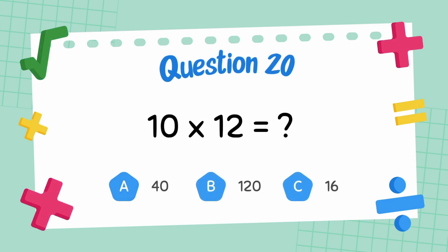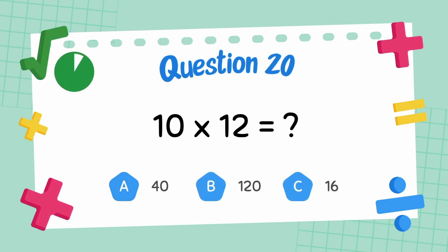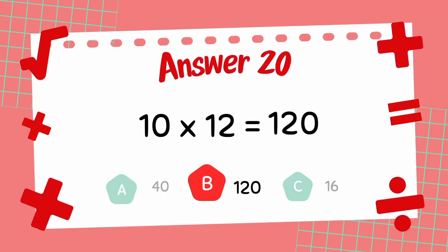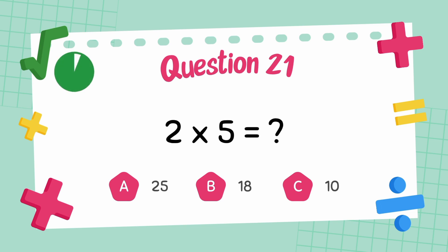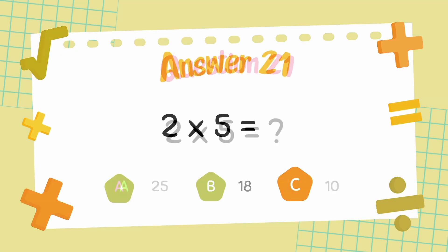What is 10 multiply 12? The answer is 120. What is 2 multiply 5? The answer is 5.